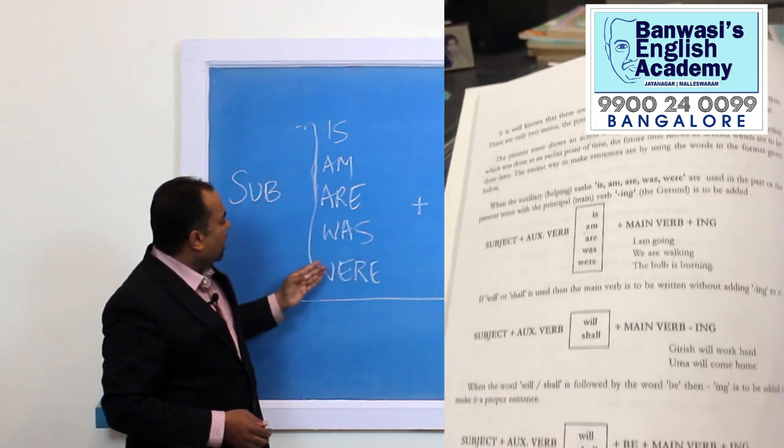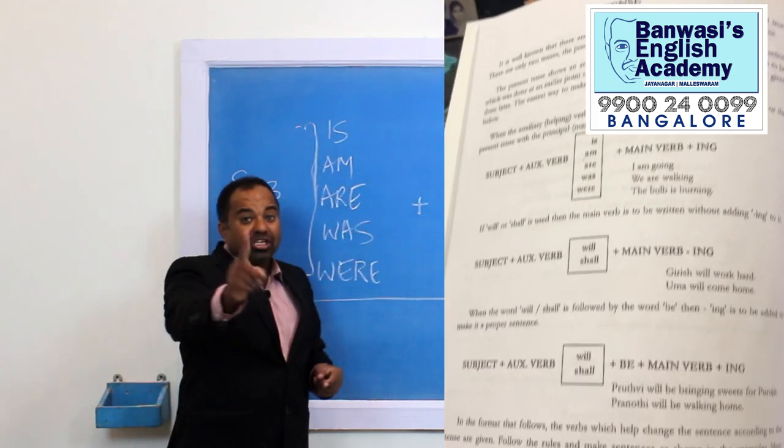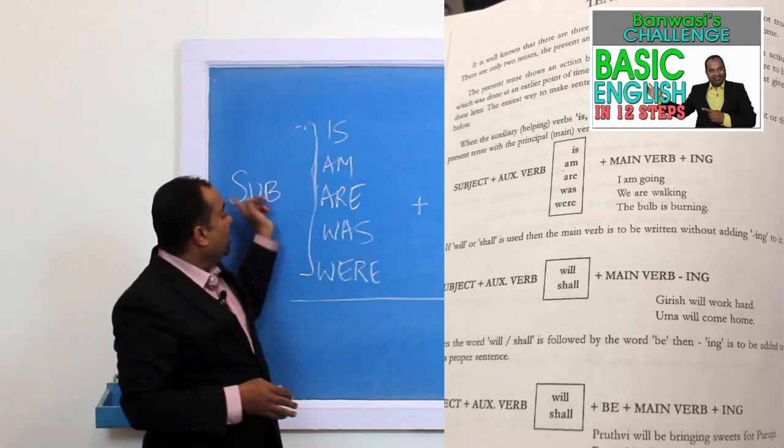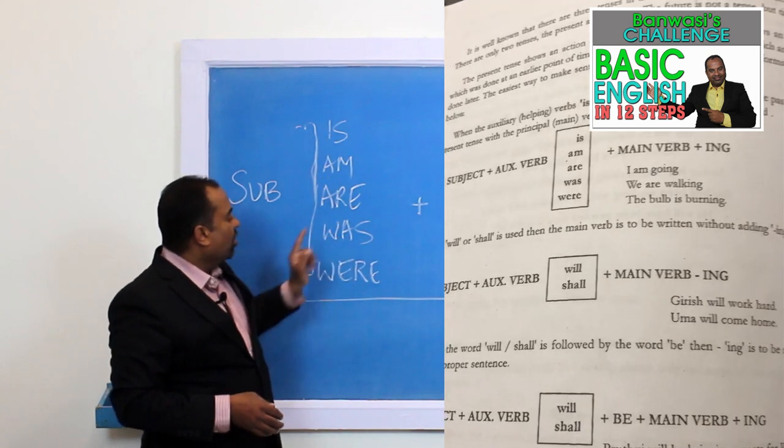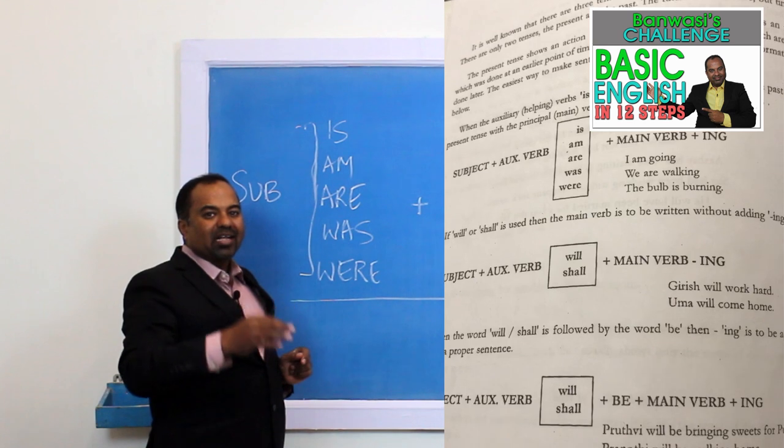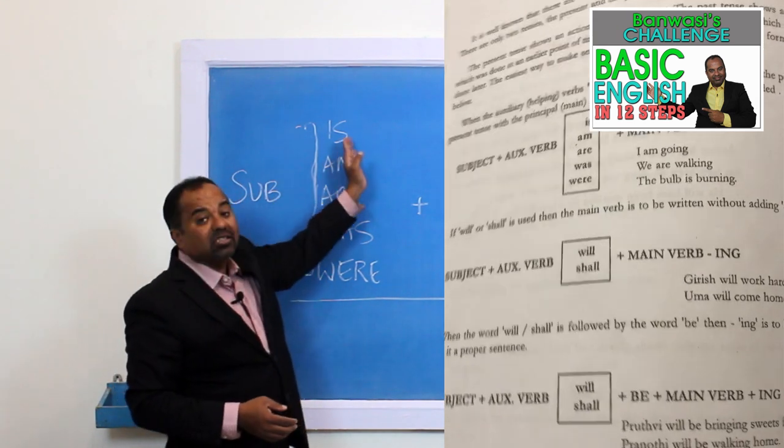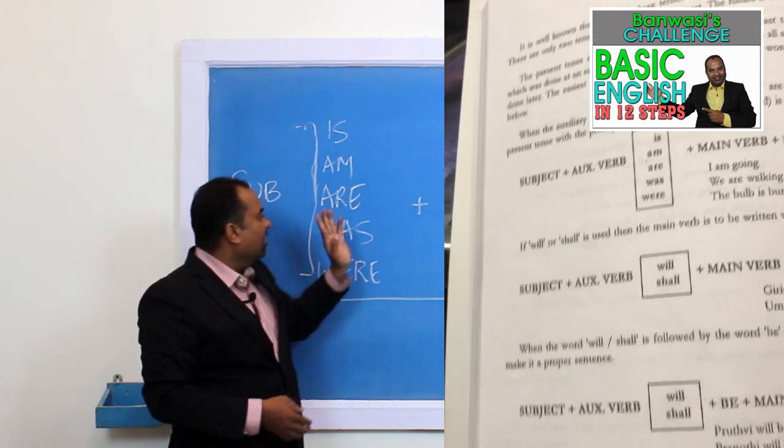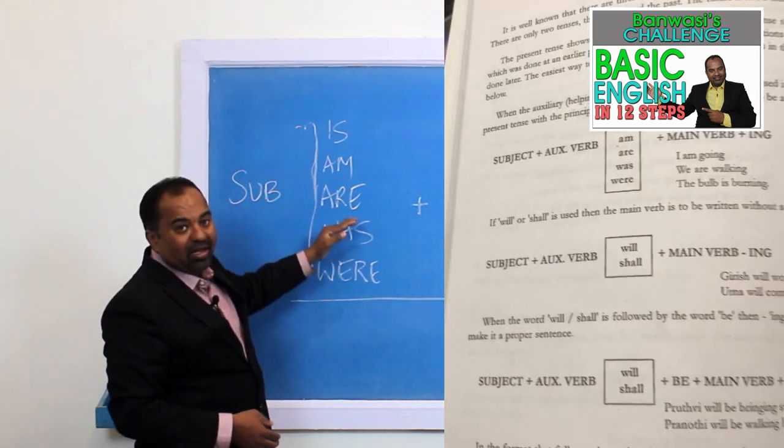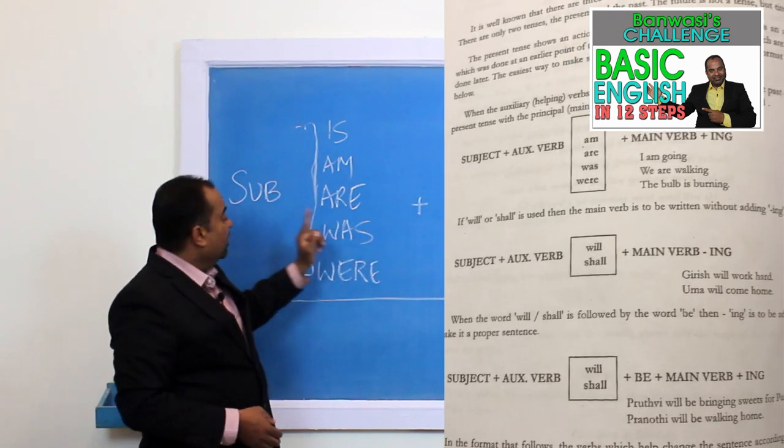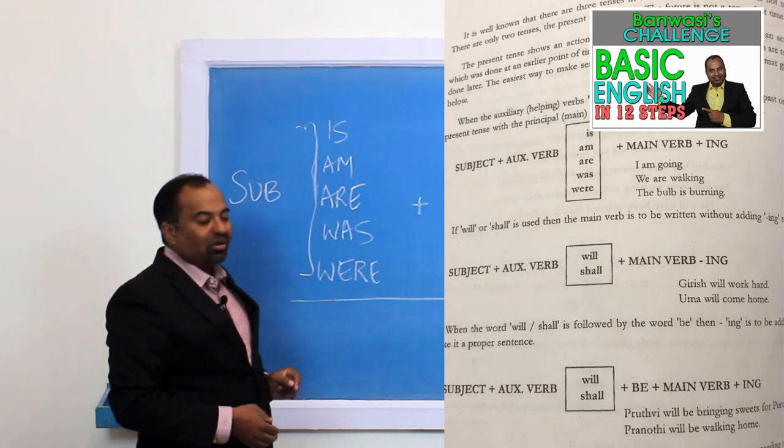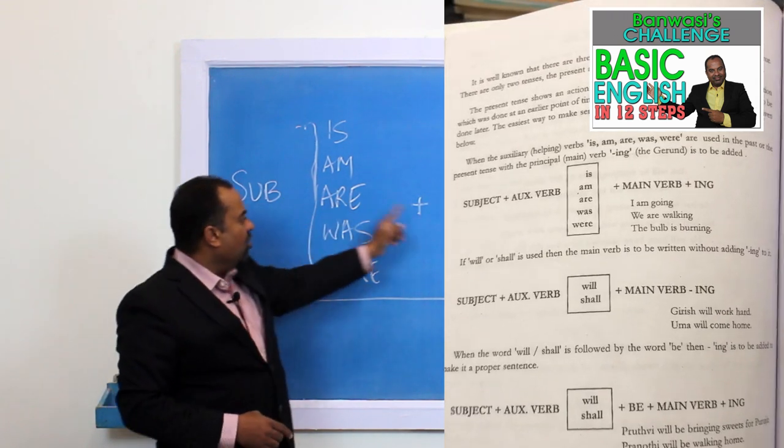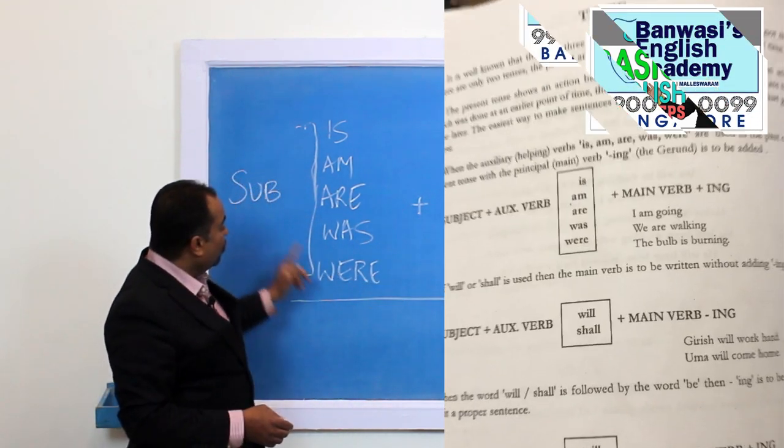Now with IS and WERE: HE IS GOING, HE IS READING, HE WAS READING. THEY ARE GOING, THEY WERE GOING. YOU ARE GOING, YOU WERE GOING.